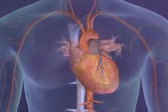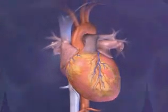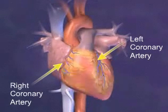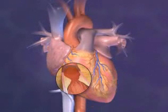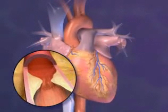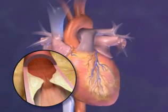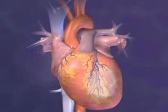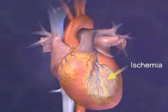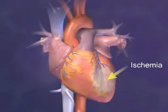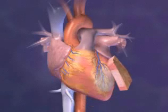The heart muscle itself gets its oxygen supply from the coronary arteries. When blood flow within a given artery is obstructed, the heart muscle normally fed by that vessel can begin to die. The initial lack of oxygen is called ischemia. If allowed to continue, it causes injury to the myocardium.